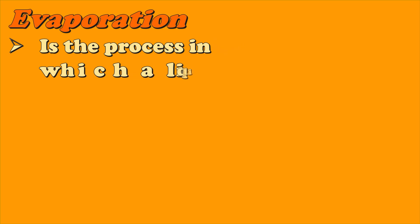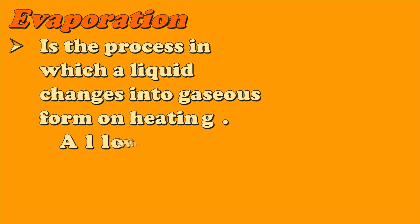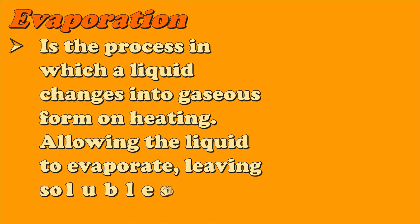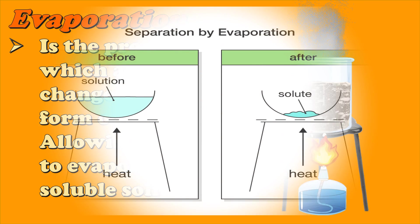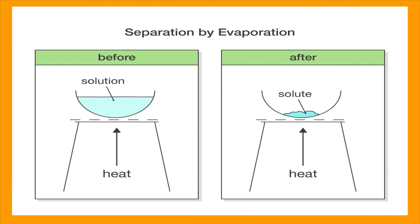Another way of separating mixtures is what we call evaporation. It is the process in which a liquid changes into gaseous form on heating, allowing the liquid to evaporate, leaving the soluble solid behind. This method also produces salt by evaporating seawater. When a salt solution is heated, water evaporates and turns into gas, or what we call water vapor, and salt remains in the container.